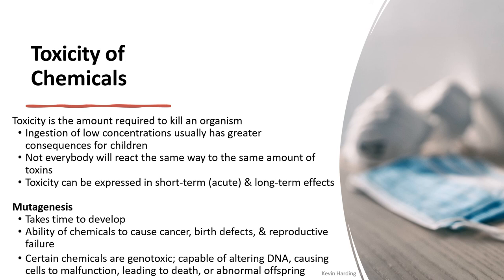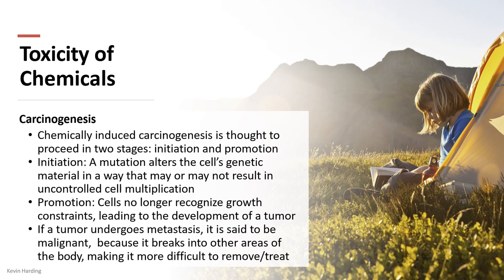Toxicity is expressed as either short-term (acute) — what happens immediately — or long-term (chronic) effects. Short term: if I ingest something now, will I get sick in 20 minutes? Long term: if I have exposure to a chemical, is there an effect 20, 30, or 40 years down the line? Long-term effects can lead to mutagenesis — a mutation of cells and DNA that takes a long time to develop. This can cause cancer (carcinogenic effects), birth defects, or reproductive failures, often due to chemicals that alter DNA, causing cells to malfunction, leading to death, abnormal offspring, or other genetic disorders.